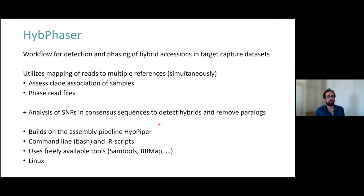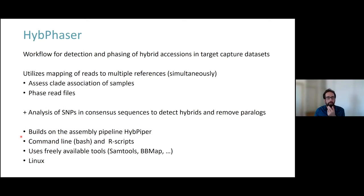HyPhaser is a combined workflow built for the detection and phasing of hybrid accessions. It heavily utilizes the mapping of reads to multiple references — first to assess the clade associations of samples, and then to phase the read files. In addition, it uses SNP counting in consensus sequences to detect hybrids and also to remove putative paralogous genes. It builds on the assembly pipeline HyPiper, using its output directly. It comprises several command-line and R scripts, uses only freely available tools like Samtools and BBMap, and requires a Linux operating system.